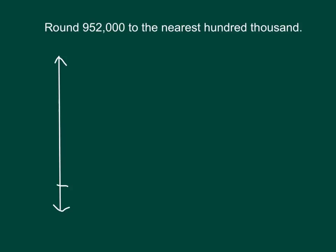Let's mark a lower endpoint, and an upper endpoint, and a midpoint. For the lower endpoint, 952,000, we ask ourselves, how many hundred thousands are in that number? And the answer to that is 9 hundred thousands, or 900,000.